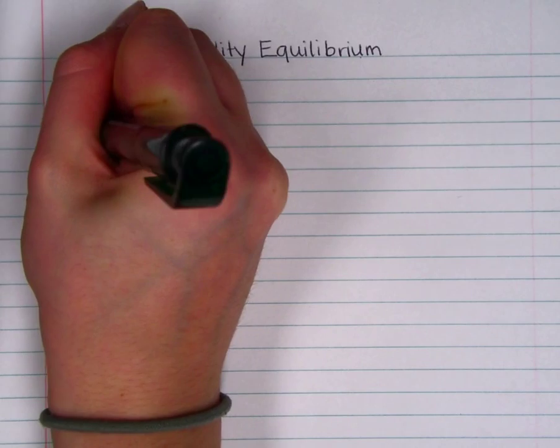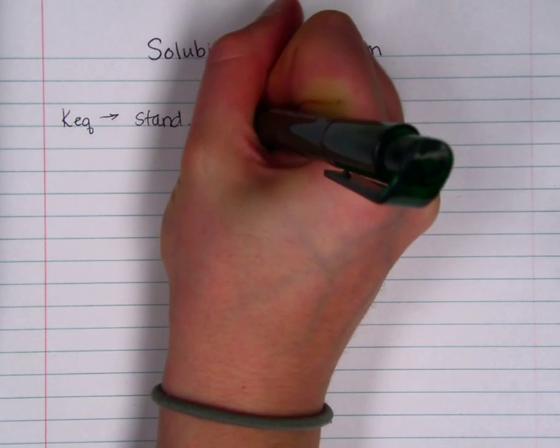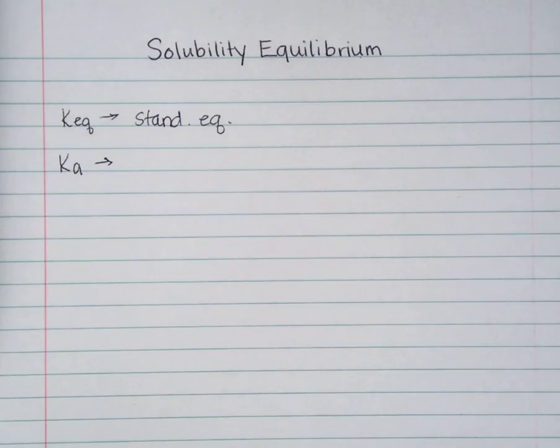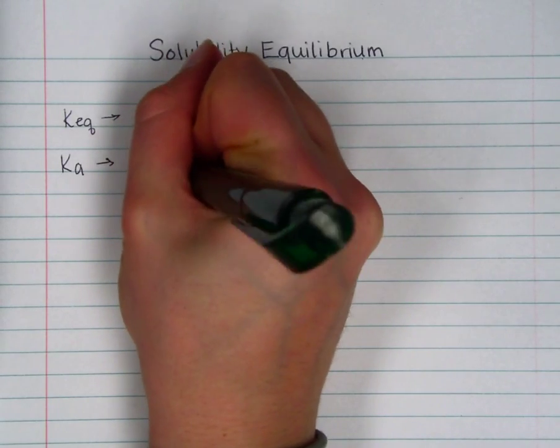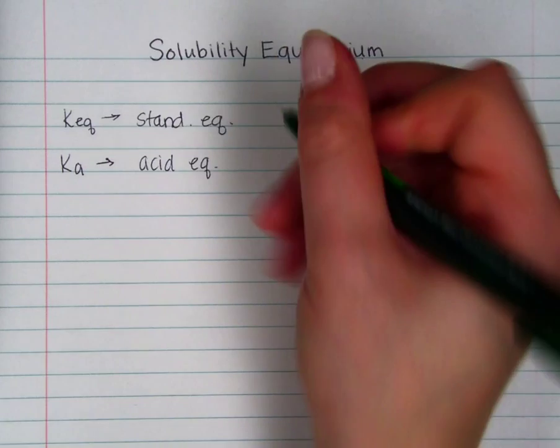KEQ just means standard equilibrium. KA, which hopefully you know and hopefully you're saying out loud to yourself, is an acid at equilibrium. Generally we write KA's for weak acids.